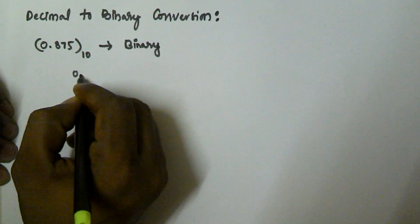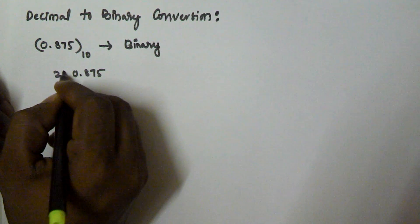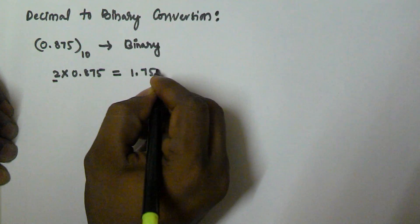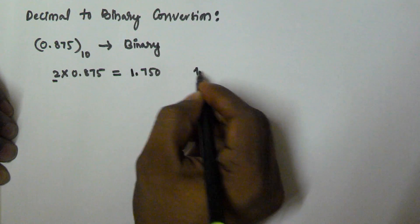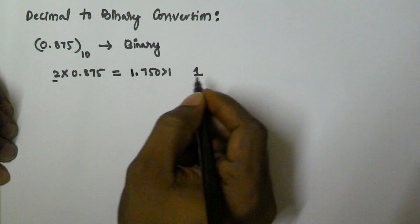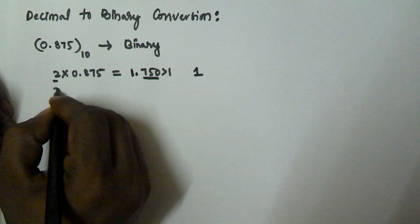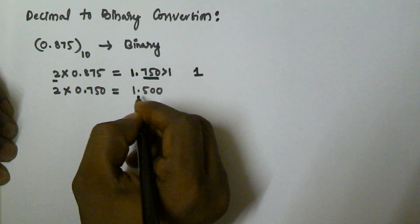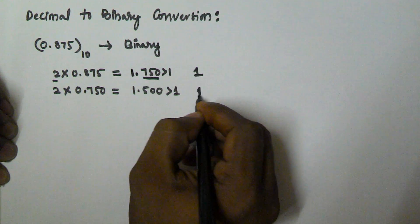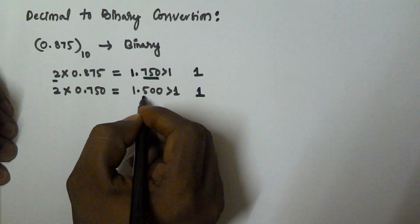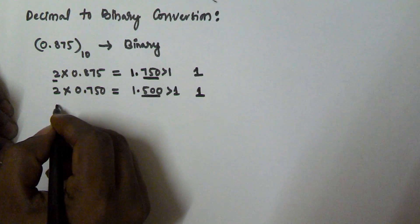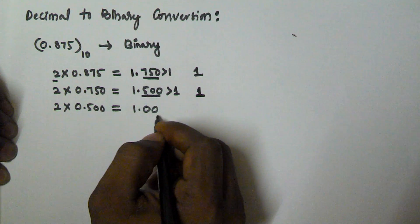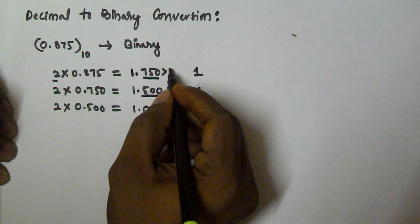To convert this number into binary, we take the given value 0.875 and multiply it by 2. So 0.875 times 2 equals 1.750. Since this is greater than 1, we take 1. Now we take the decimal part 0.750 and multiply by 2, which gives 1.500. Again greater than 1, so we take 1. Then 2 times 0.500 equals 1.00.